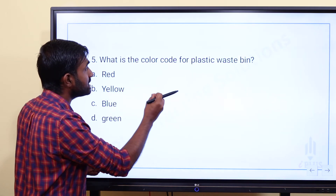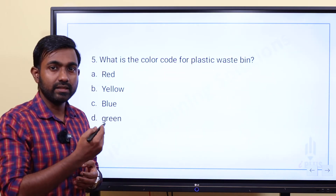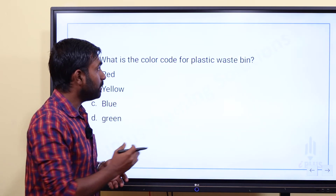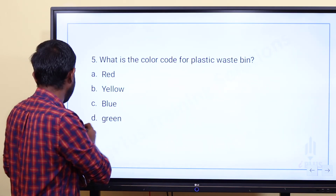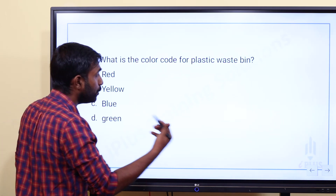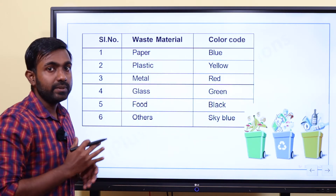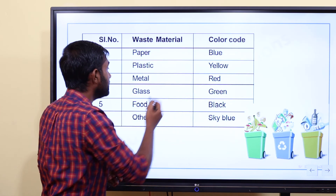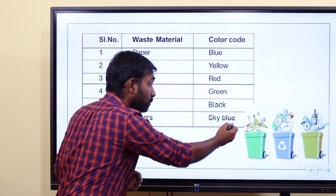What is the color code for the plastic waste bin? In the industry, we use different colors for waste bins — workshop safety, material handling, material garbage, waste removal. Blue is for one type. Plastic waste is yellow. Metal is red. Glass is green. Food waste is black.